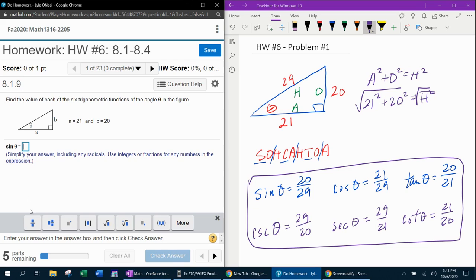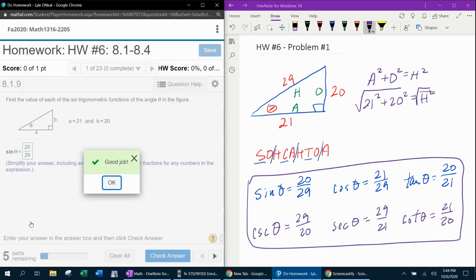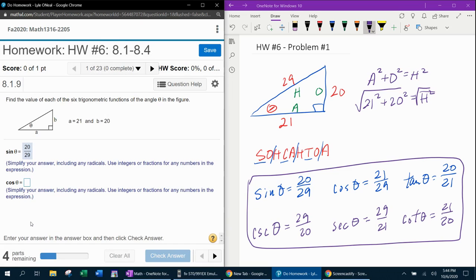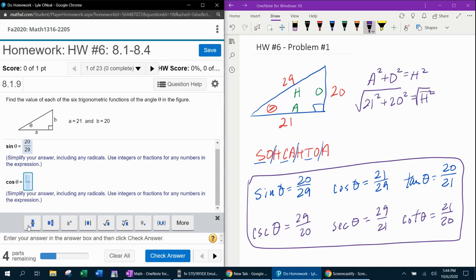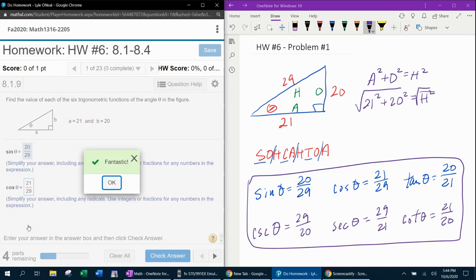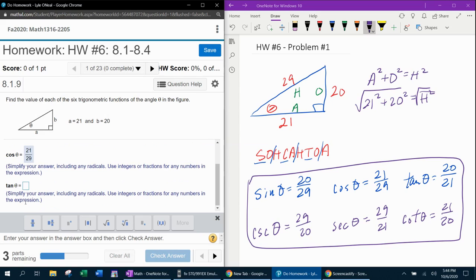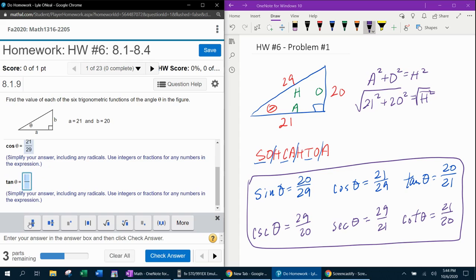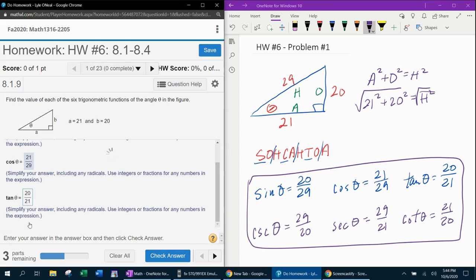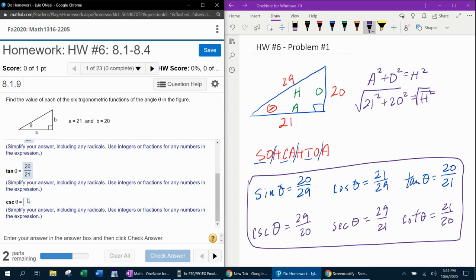And now if you'll give me one second, we need to input those and see if I lied to you. Cosecant is 20 over 29. Cosine E is 21 over 29. Tangent E is 20 over 21. So far so good.